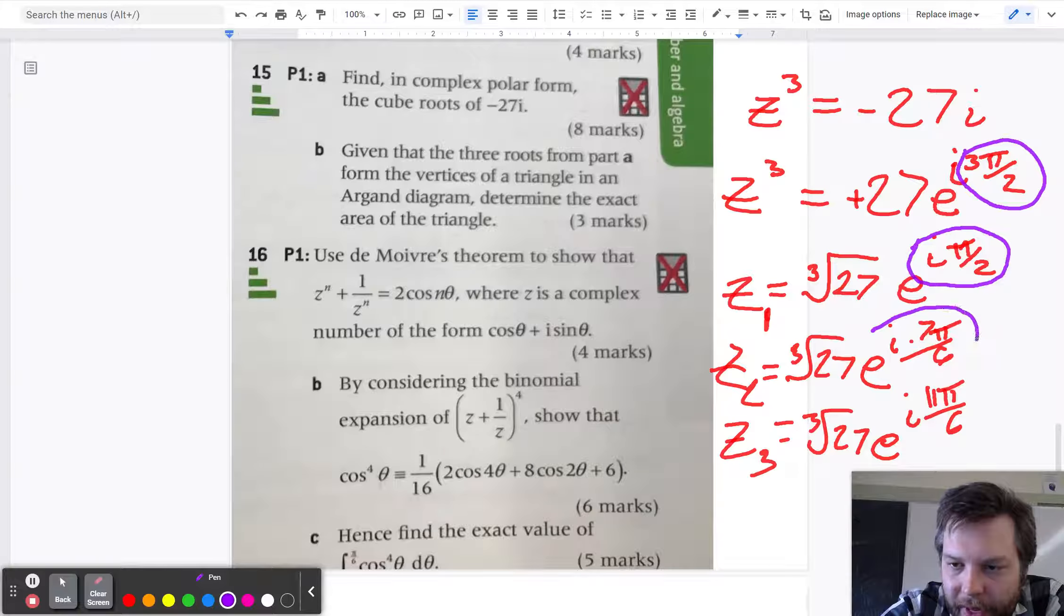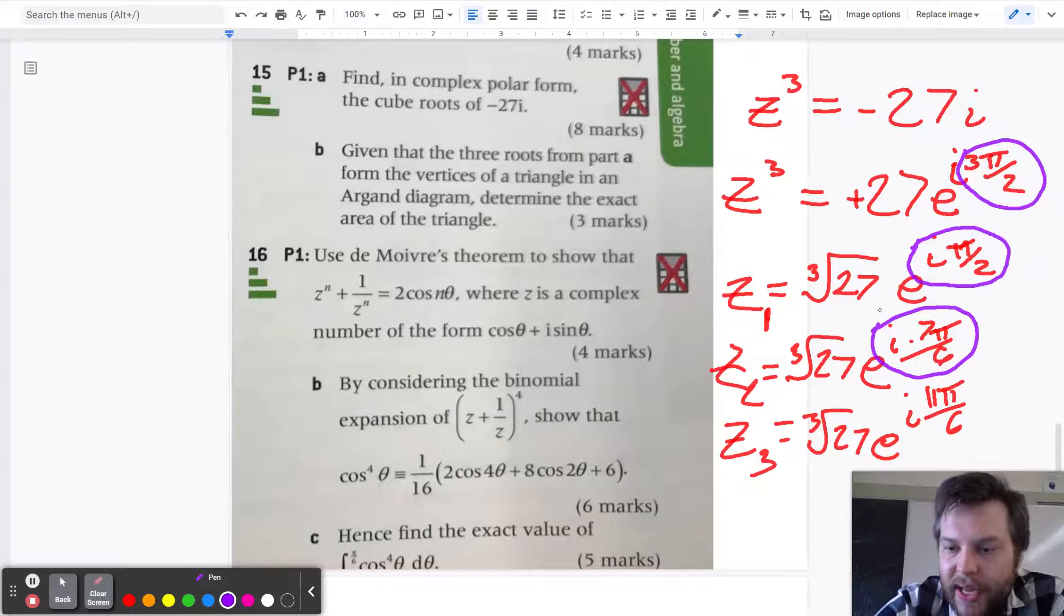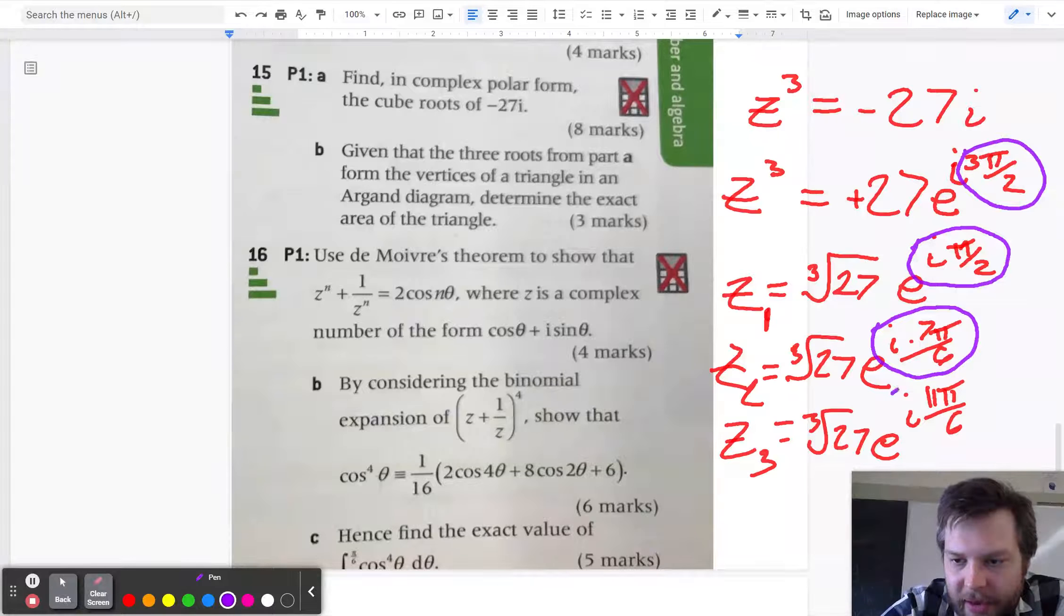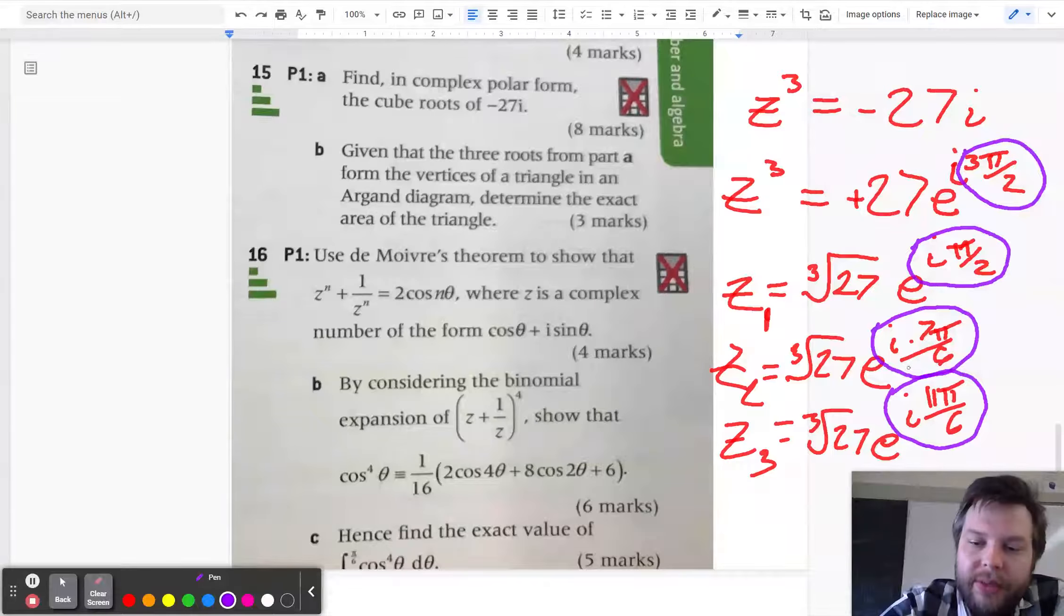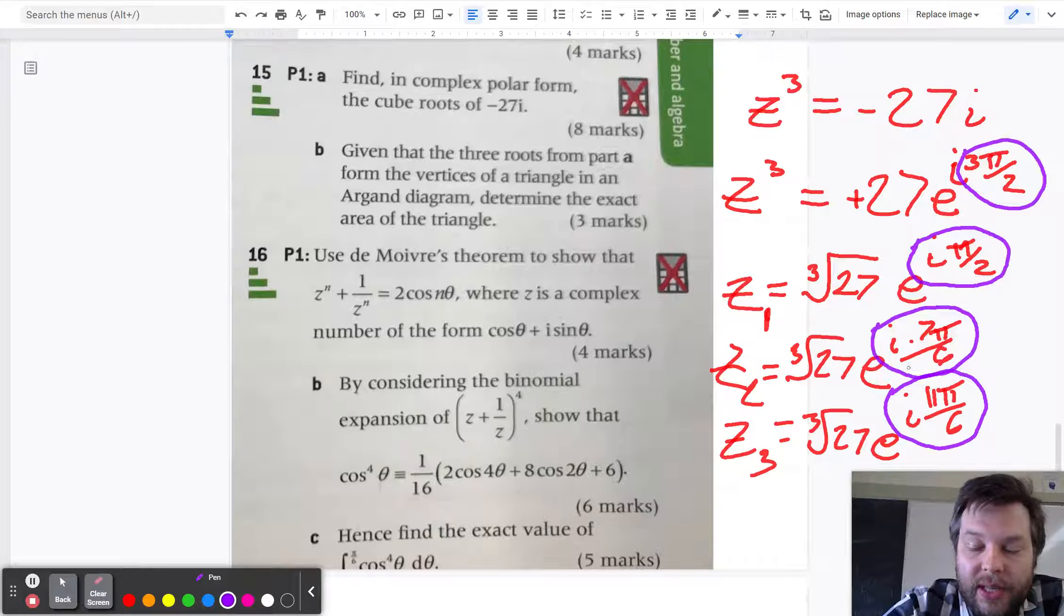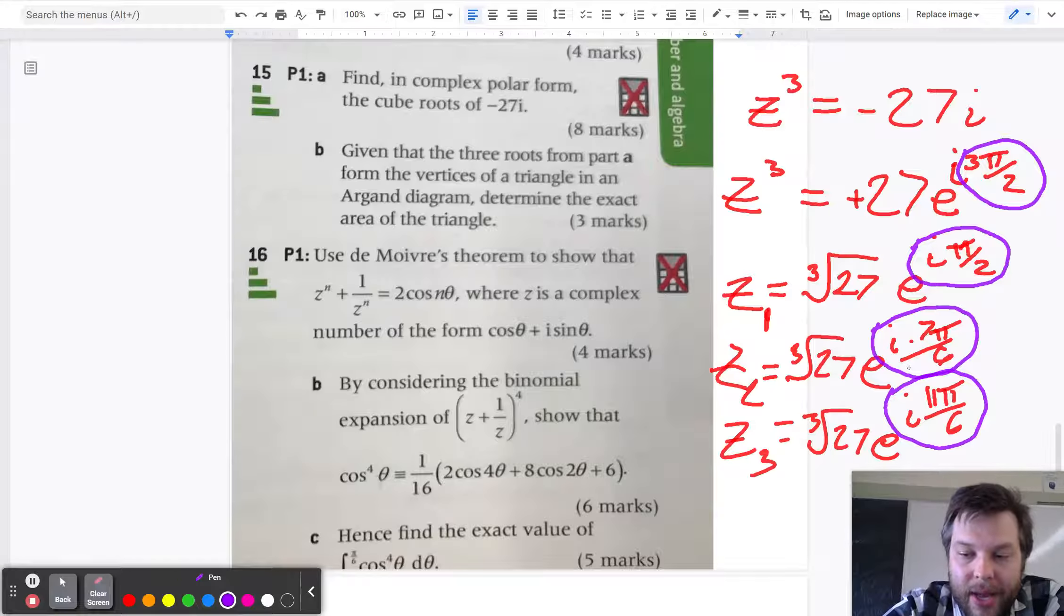If I multiply this angle by 3, it becomes 7 pi over 2. And 7 pi over 2 is the same as 3 pi over 2, if you subtract a full circle. And same idea here. If I multiply this angle by 3, it becomes 11 pi over 2, which is 2 full circles plus another 3 pi over 2. And so that's the idea of using De Moivre's theorem to find the n-th roots.